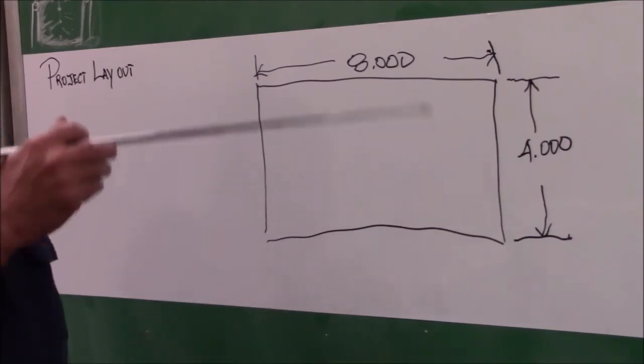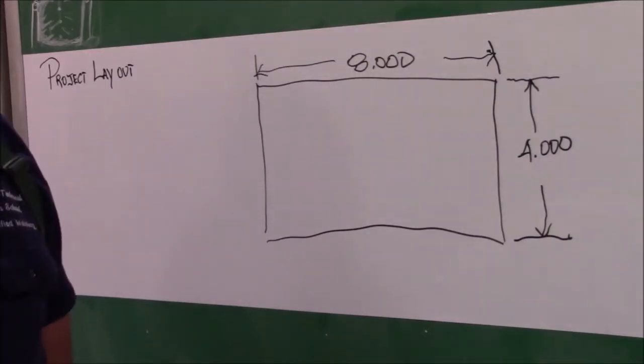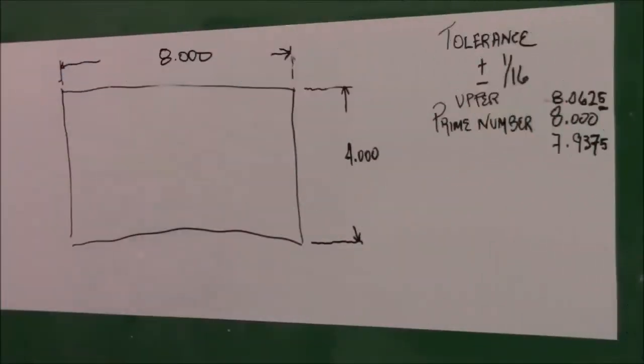The piece of metal that we are working with is eight inches by four inches. That's the one that I showed you earlier. The first thing that we want to talk about is our tolerance. There are two types of tolerances, and those will be discussed as we go. There is what they call a unilateral tolerance that means one way.